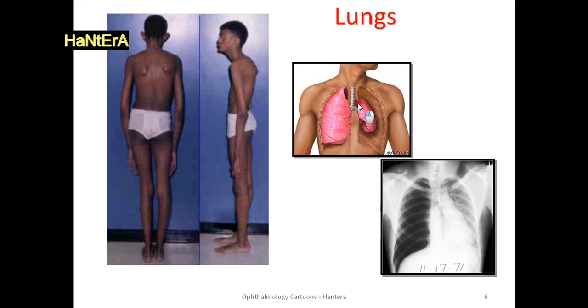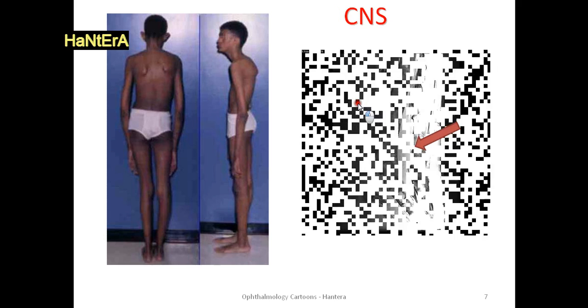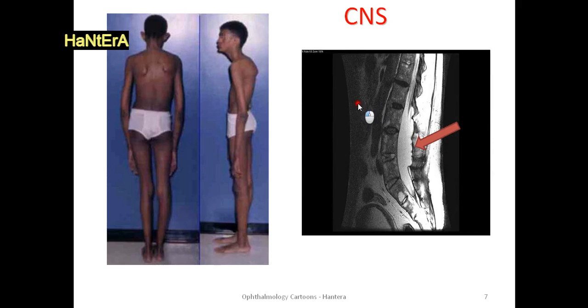If not treated, death. All secondary to pleural weakness. Dural ectasia in the lower back is secondary to connective tissue weakness in the dura covering the spinal cord.